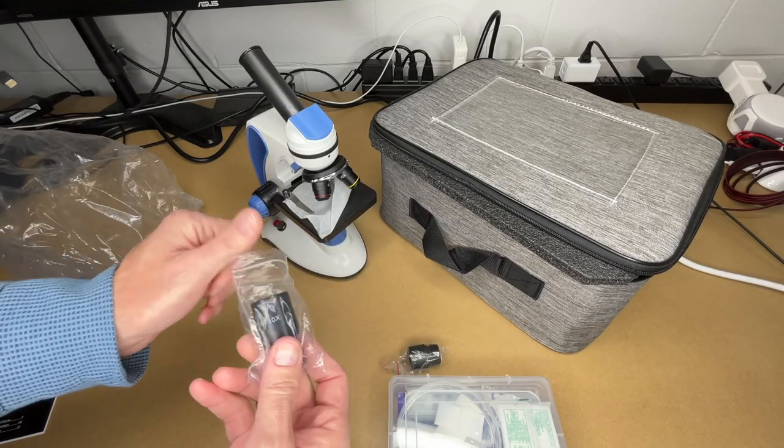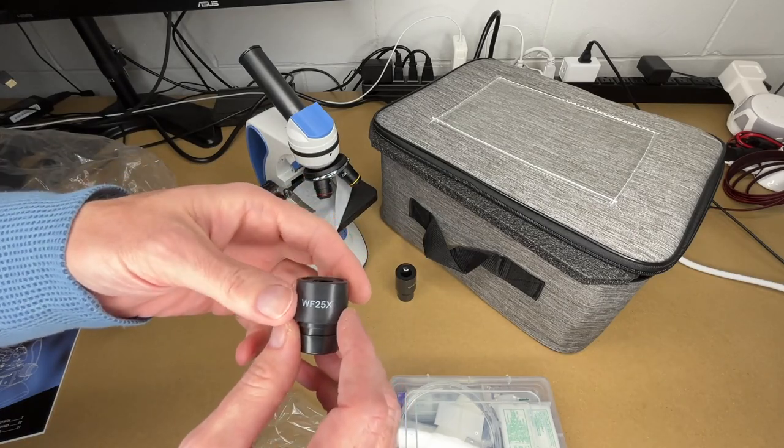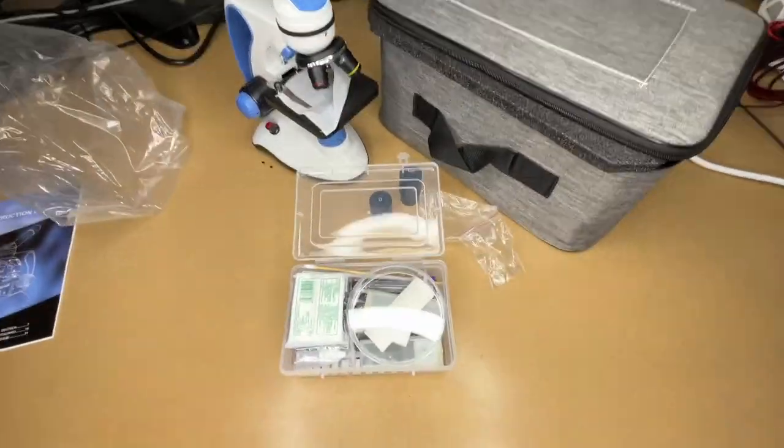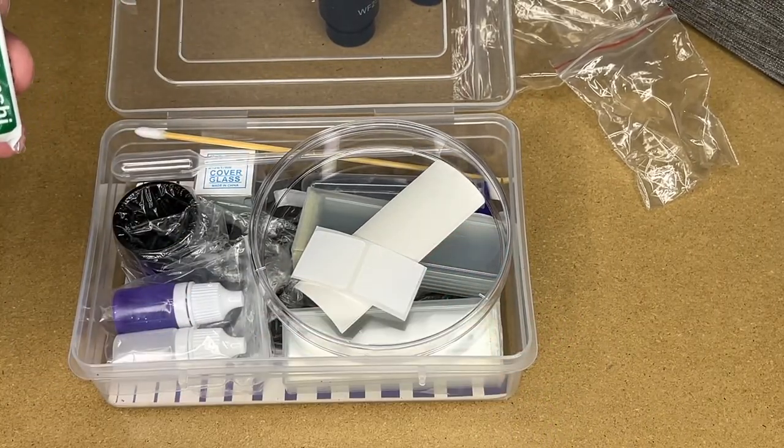So let's look at the accessories. This is the 10x eyepiece. Here's the 25x eyepiece. This is organized really nice in here. I don't know that I'm going to pull it all out, but I'll take a look at it best I can.